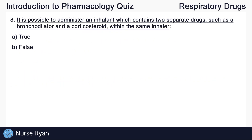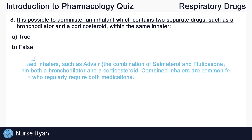Moving on to question number eight. It is possible to administer an inhalant which contains two separate drugs, such as a bronchodilator and a corticosteroid, within the same inhaler. The answer is A, true. Combined inhalers, such as Advair — which is the combination of salmeterol and fluticasone — contain both a bronchodilator and a corticosteroid. Combined inhalers are common for patients who regularly require both medications.